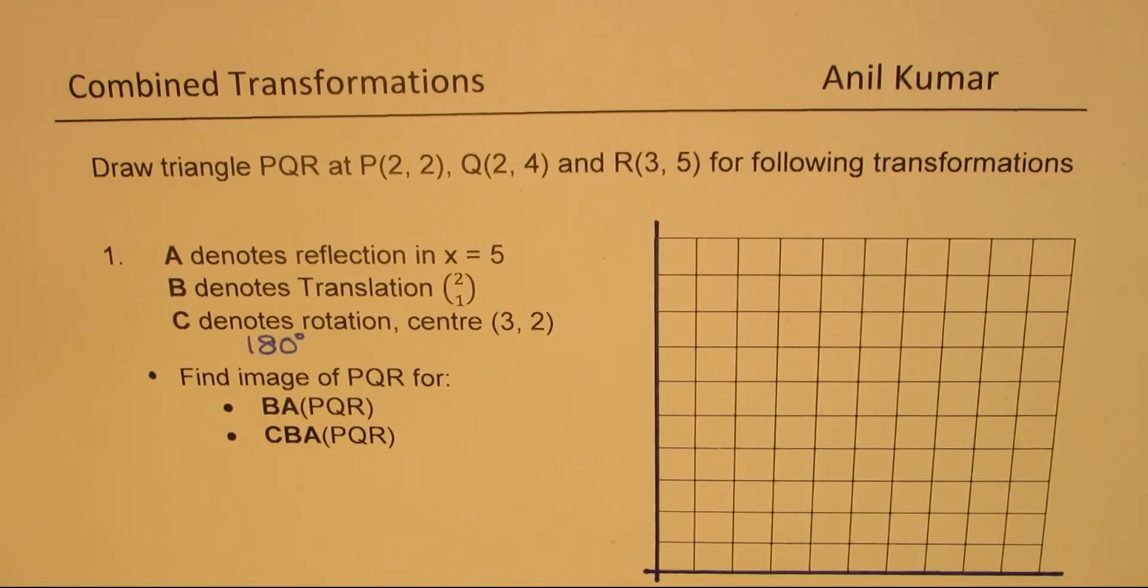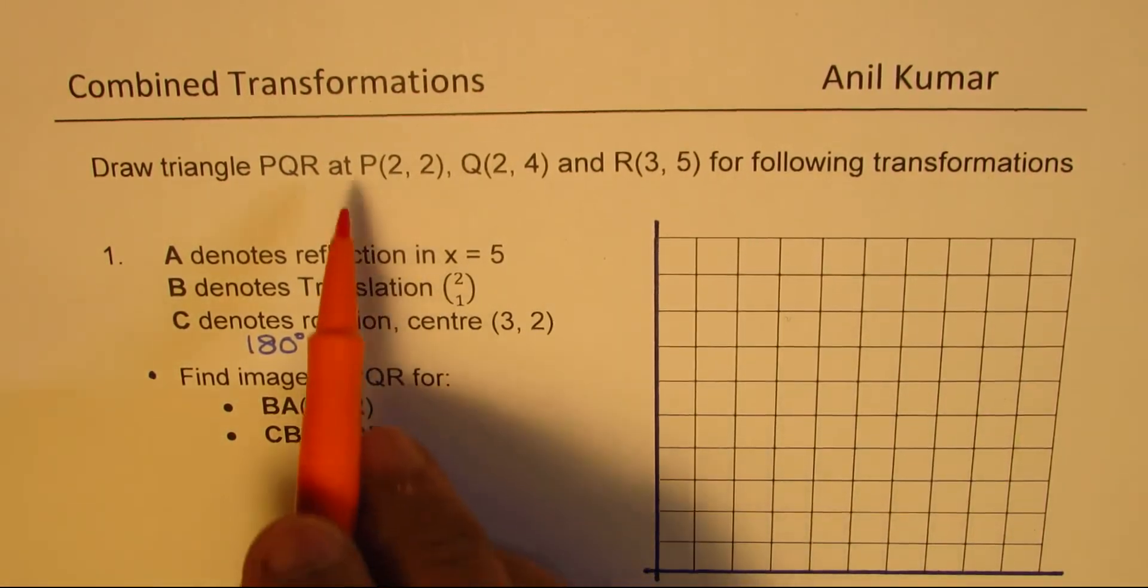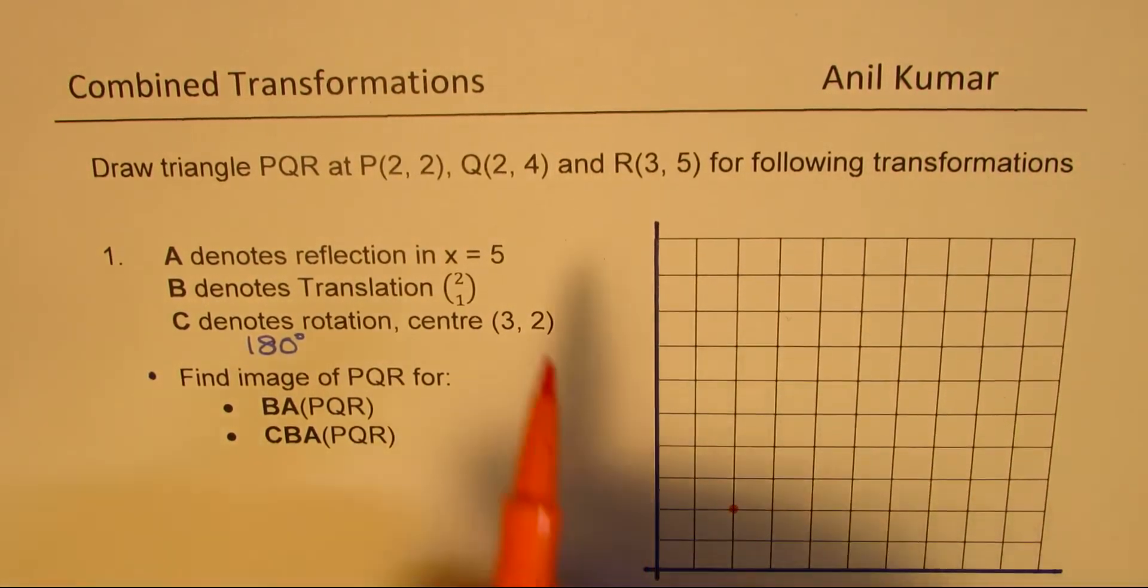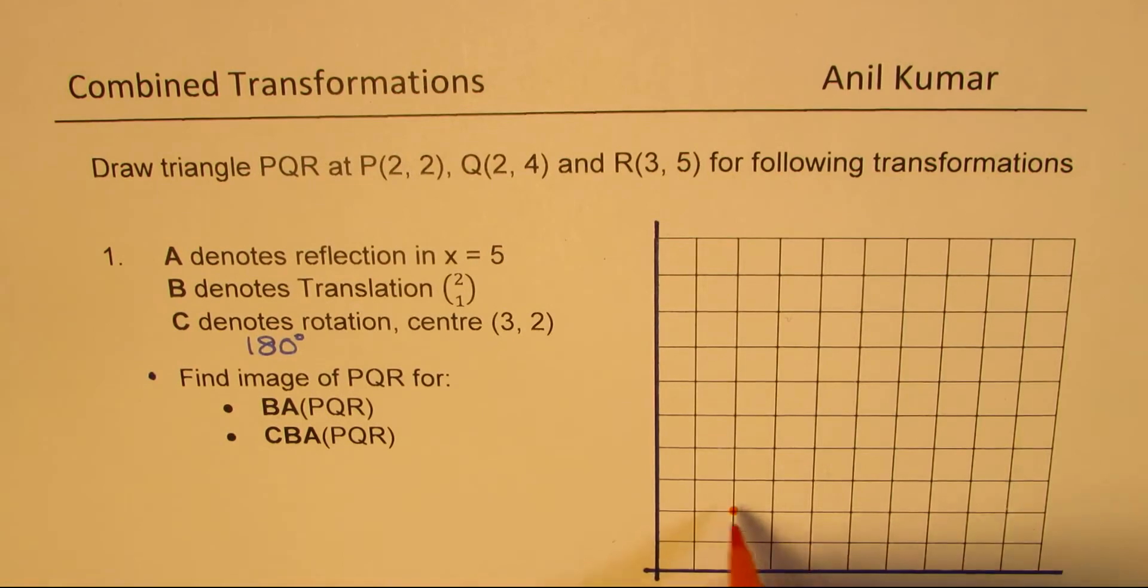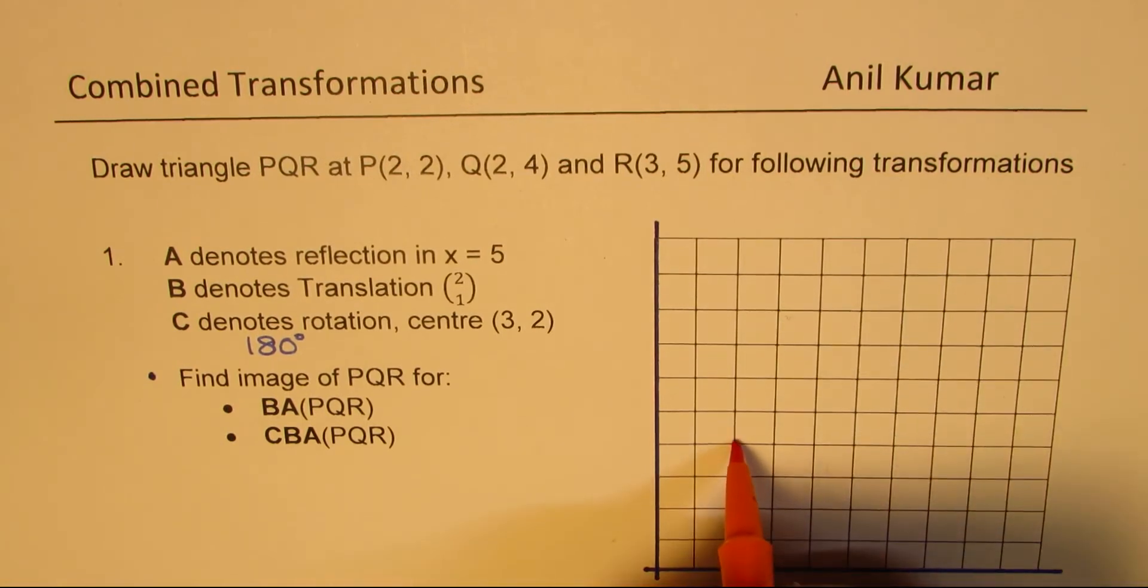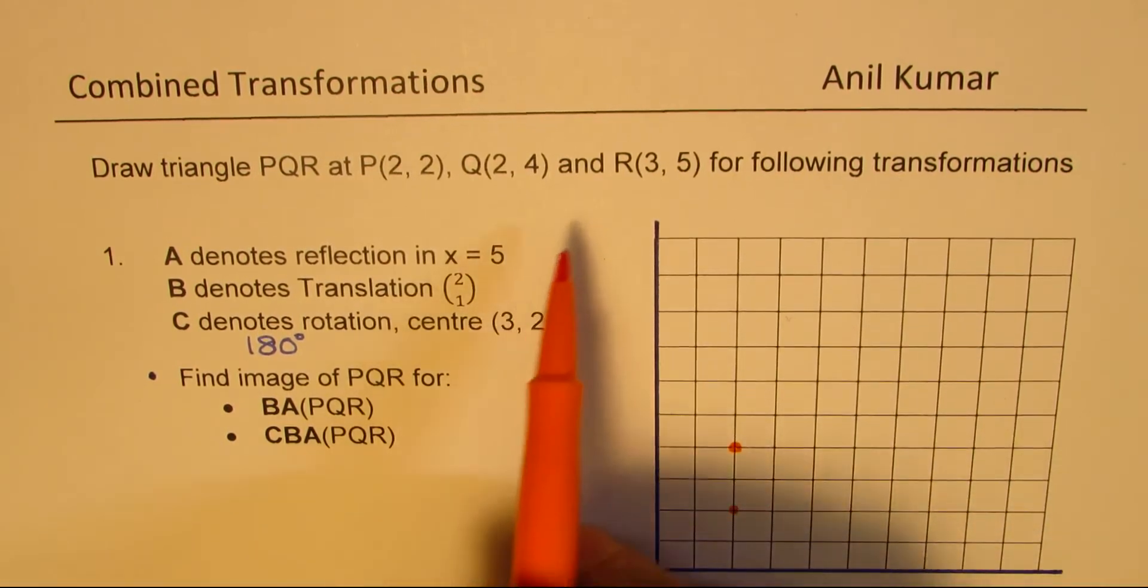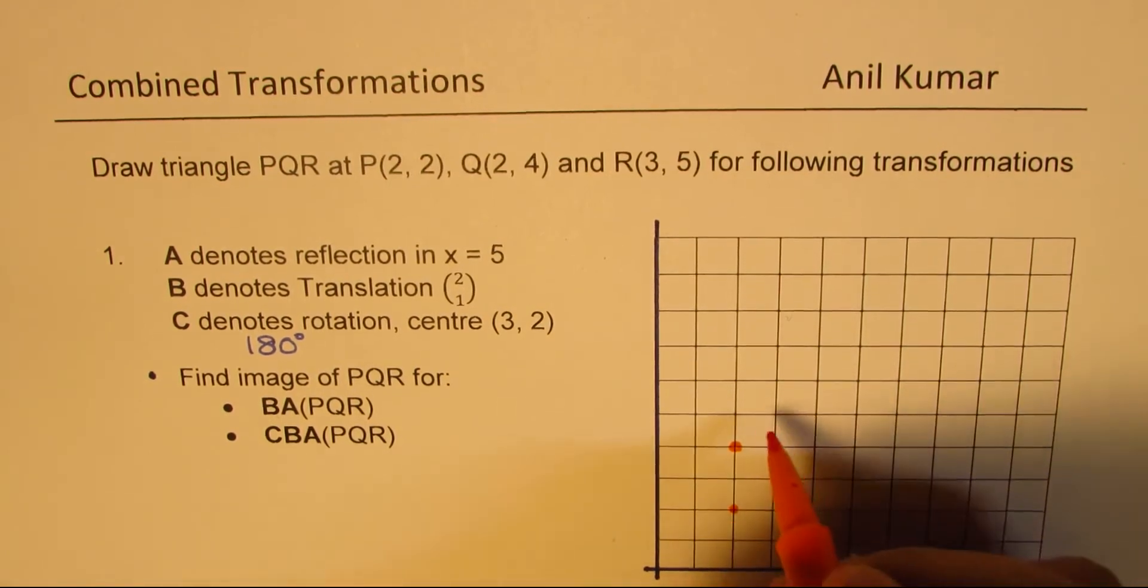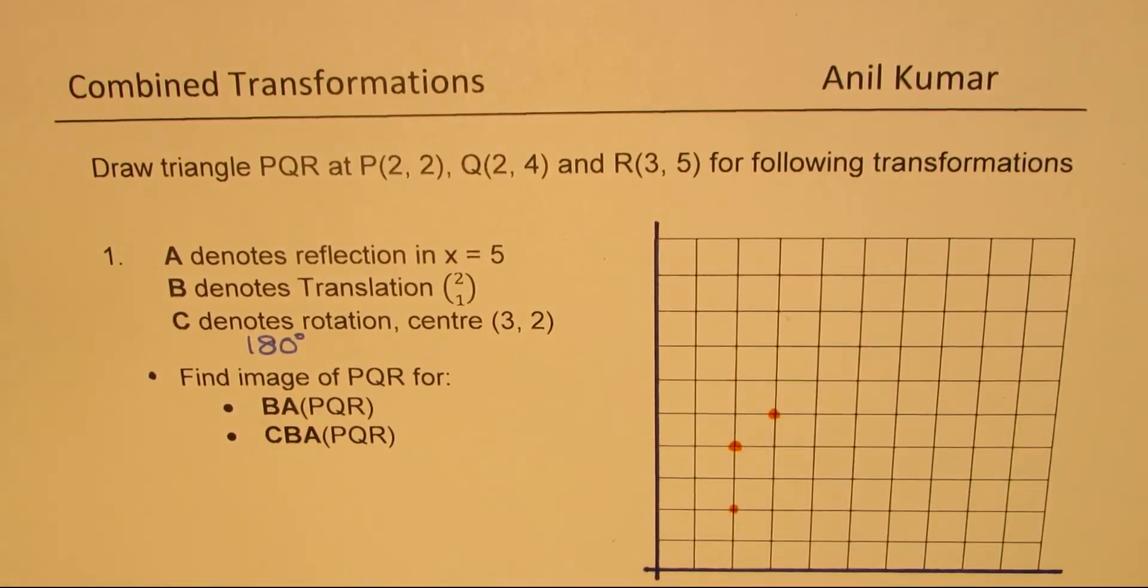Let's begin by plotting the triangle first, PQR. Point P is given as (2,2). Then Q is (2,4). And R is (3,5). So that is the triangle we are talking about.